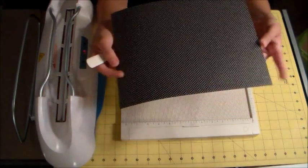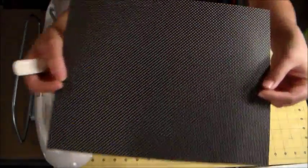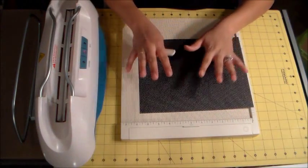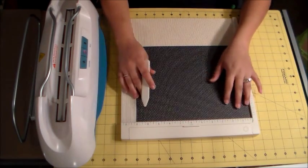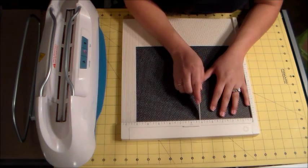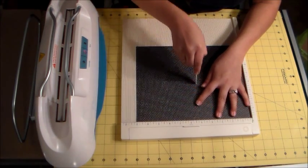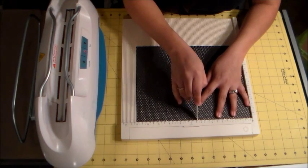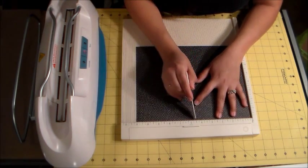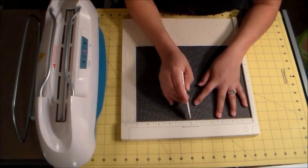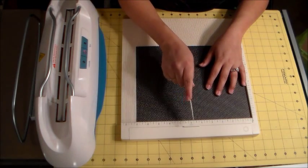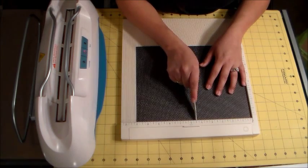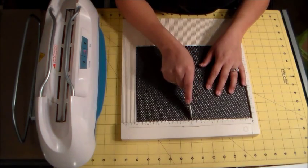I just have an 8 1/2 by 11 cardstock and this is looking kind of crazy on there, but it's polka dotted, really pretty and I'm going to put the printed side up, so we're going to be scoring here at 5 1/8 and 5 3/8, 5 5/8 and 5 7/8.